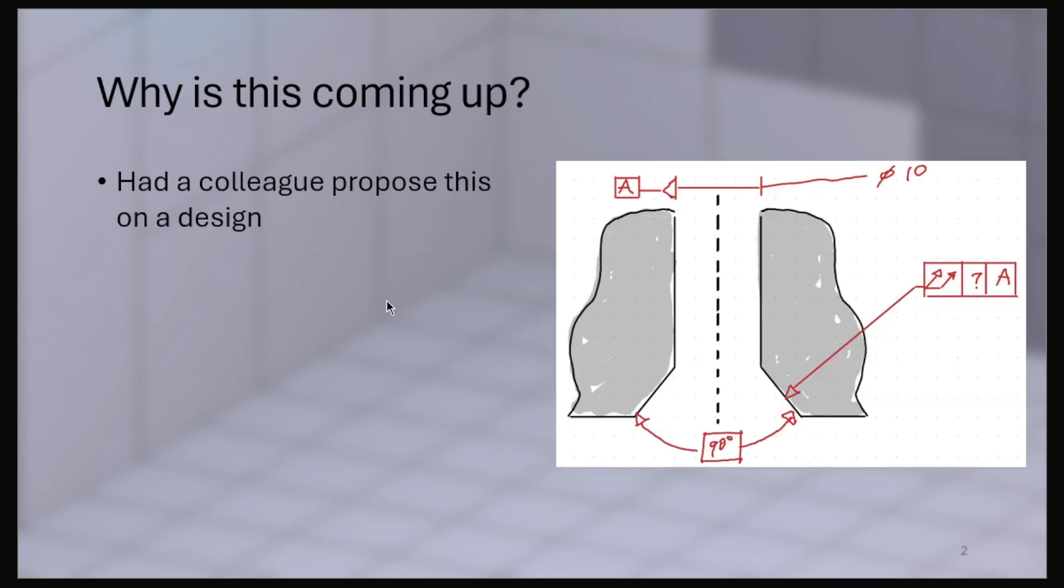The reason this is coming up is that I had a colleague propose something like this, where they were going to control a cone with a total runout to a datum axis. When I first saw this, I was not sure what to do with it because I had never seen something like that before.